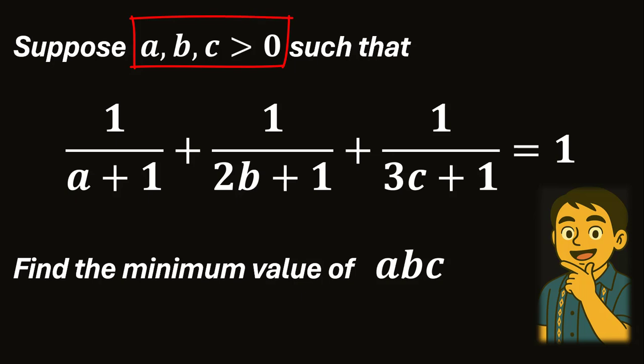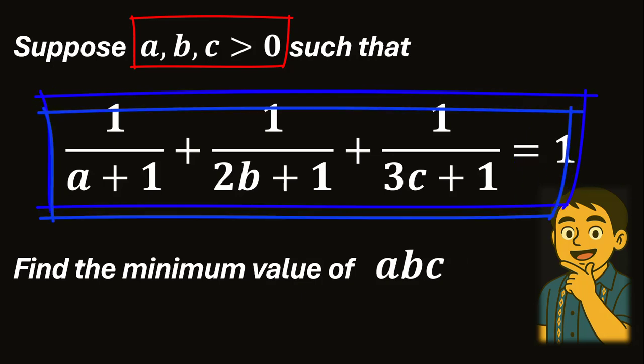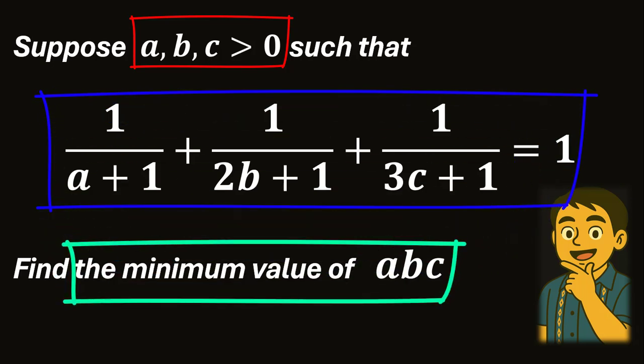Suppose A, B, and C are positive real numbers, such that 1 divided by a plus 1, plus 1 divided by 2B plus 1, plus 1 divided by 3C plus 1, is equal to 1. We are asked to find the minimum value of the product ABC.